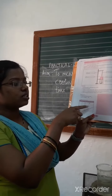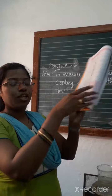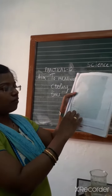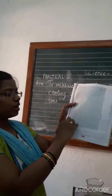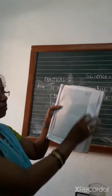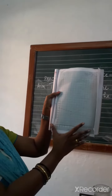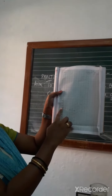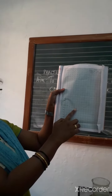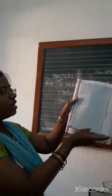I got readings of 68, 65, 64, 62, 60 degrees — recorded each minute. I will then plot a graph, and the graph will look like this. All of you can see it in the video.